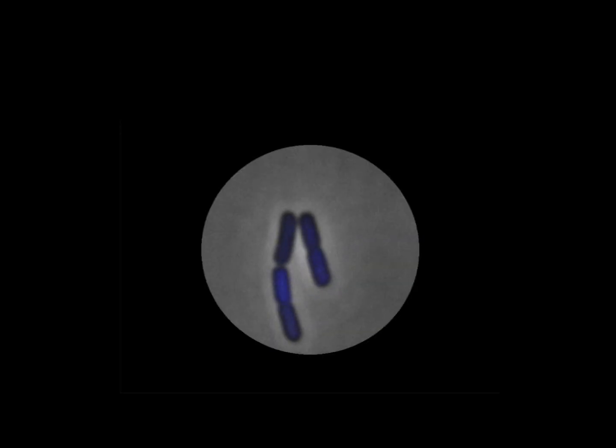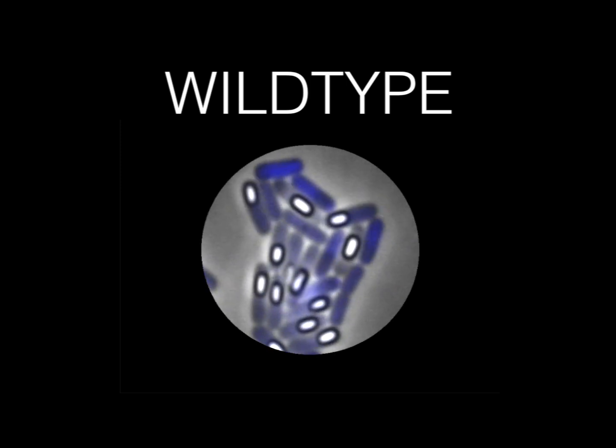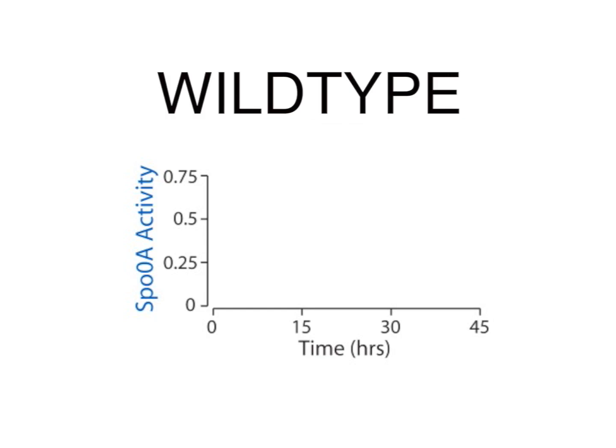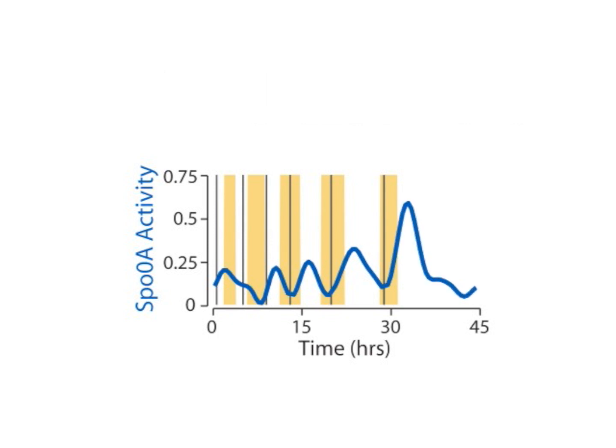To test this model, we made time-lapse microscopy movies of sporulating Bacillus cells. With fluorescent proteins, we could simultaneously track Spo0A activity and DNA replication in single cells. Our measurements confirmed that Spo0A activity indeed pulses once every cell cycle, and the pulses follow the completion of DNA replication.